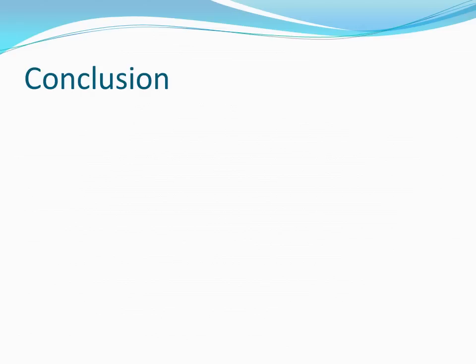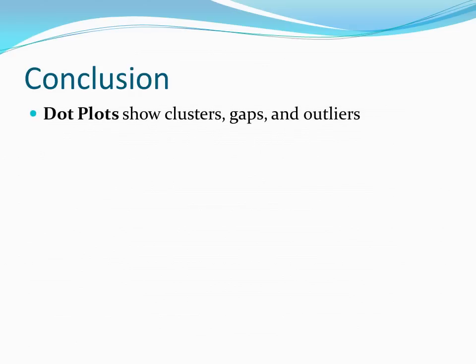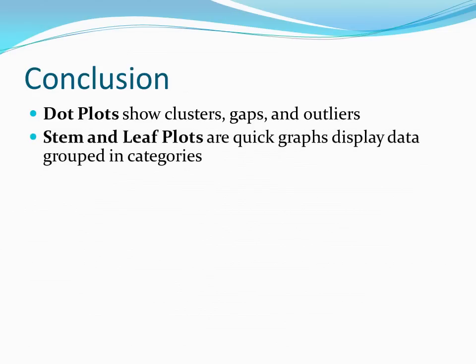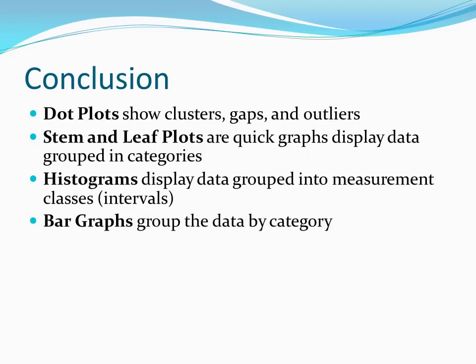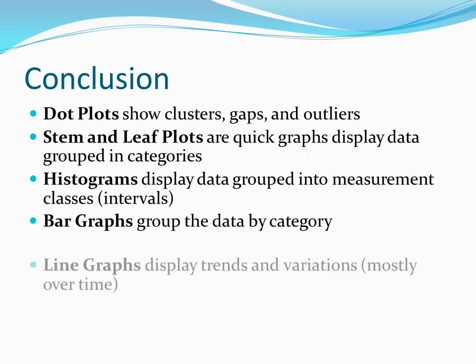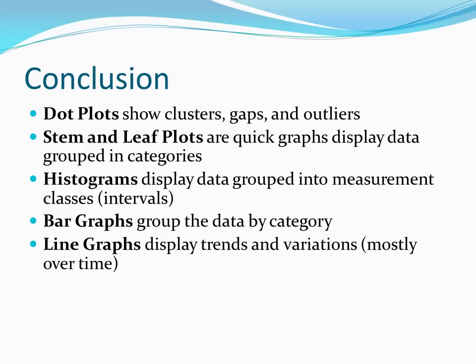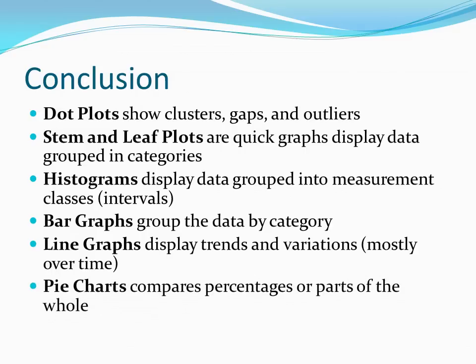In conclusion, in this section we've seen that dot plots can be used to show clusters, gaps, and outliers; that stem and leaf plots are quick graphs that display data grouped into categories; that histograms display data grouped into measurement classes or intervals; that bar graphs can be used to group data by categories; that line graphs are best for displaying trends and variations, mostly over time; and that pie charts can be used whenever we want to compare percentages or parts of the whole. Be certain to look at some of the practice problems from section 8.1, and look forward to seeing you in class.